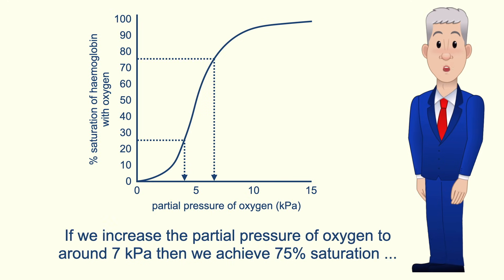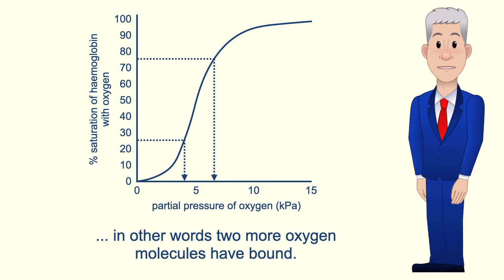If we increase the partial pressure of oxygen to around seven kilopascals then we achieve 75% saturation. In other words, two more oxygen molecules have bound.